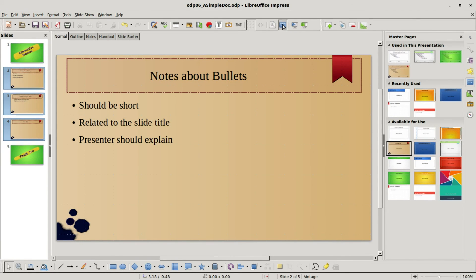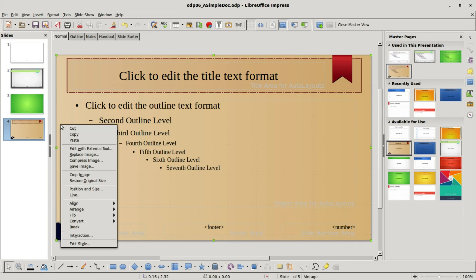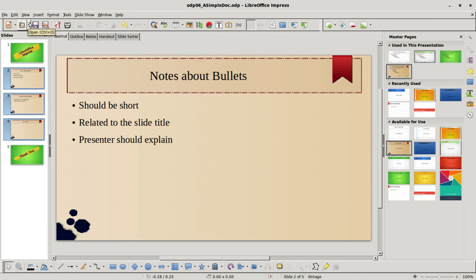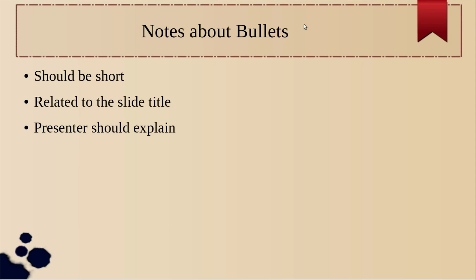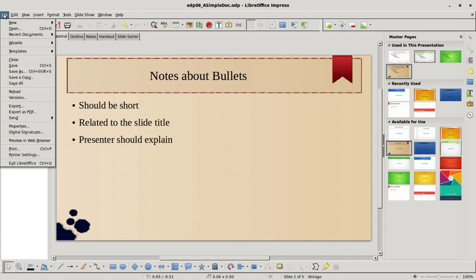A quick workaround for that is to go up to the Slide Master, then right-click outside the box but still on the brown background, and choose Convert to Bitmap. We see it just got a little brighter — we lost the gradient, which is what happened. Going back to normal view via View > Normal, I'll start from the current slide and we can see that it now fills the whole page. That's a quick workaround if you want to use the Vintage master page.